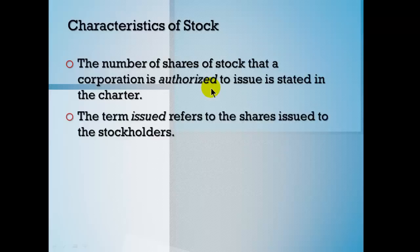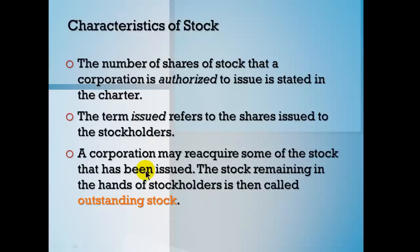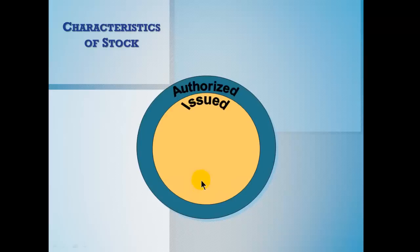The number of shares of stock authorized to issue is stated in your charter. You can have authorized far more shares than what you've actually issued out into the market. Outstanding stock is the number of shares actually in the hands of stockholders at any moment. Authorized can be greater than issued, which can be greater than outstanding. The difference between issued and outstanding could be treasury stock — when a company buys back its own stock from the open market. Those shares are still authorized and issued, just not outstanding.